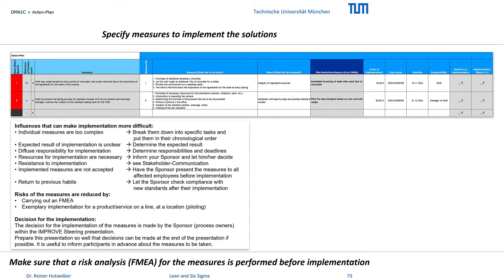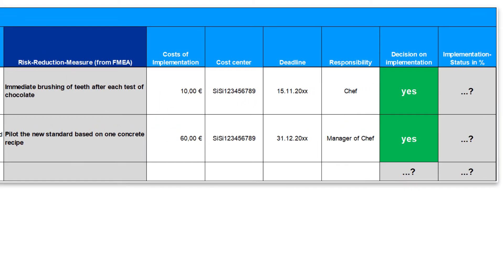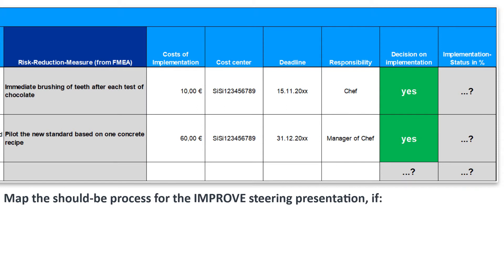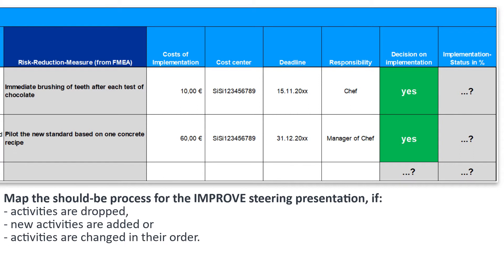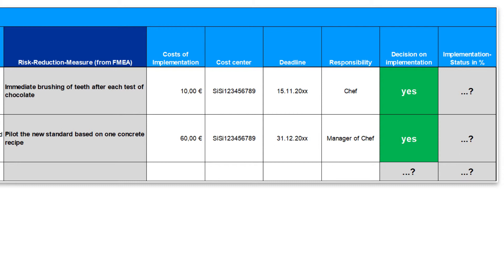This concludes the most important preparations for the improved steering presentation. The decision for or against implementation is made by the sponsor and the process owners. If there are important changes in your process flow — if activities are dropped, new activities added, or if the order of the activities is to be changed — then you should map the new process to increase understanding and acceptance. Assign changed methods and resources to activities as you did in the measure phase, but now for the new should-be process. Prepare this presentation so well that decisions can be made at the end of the session if possible.